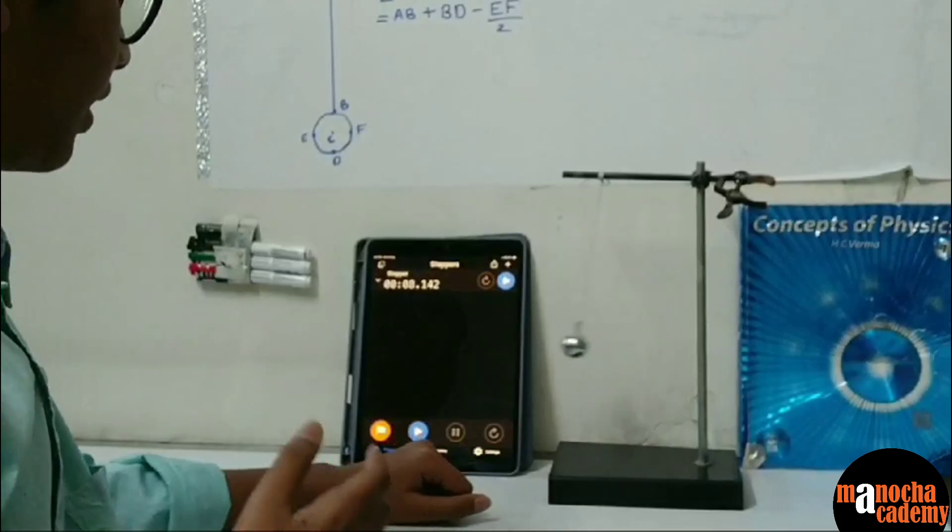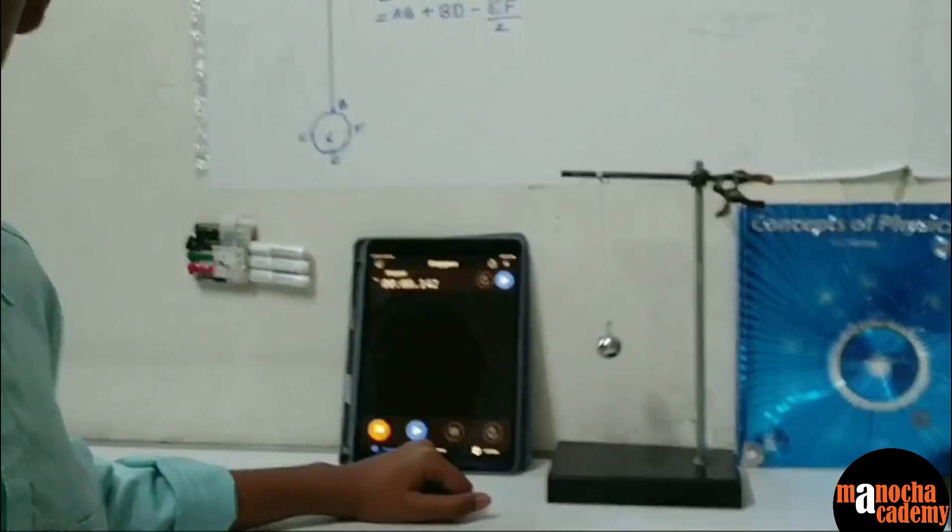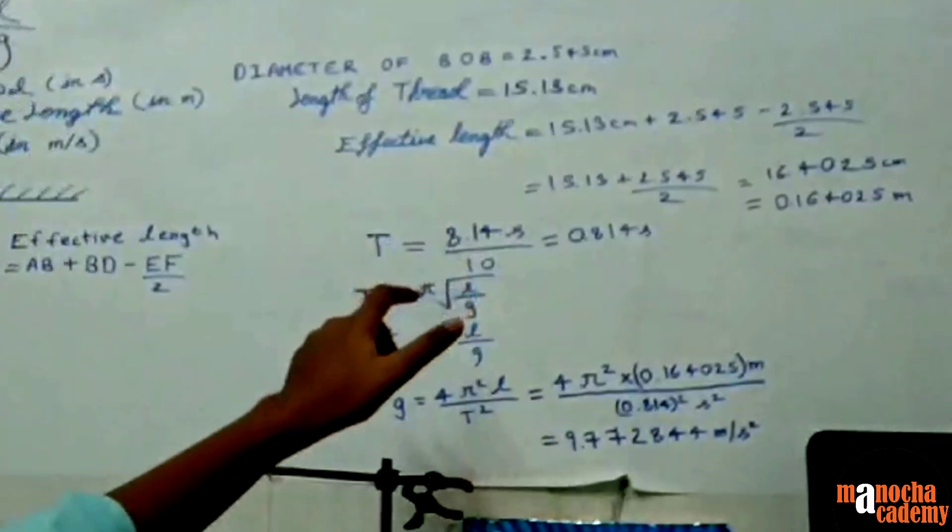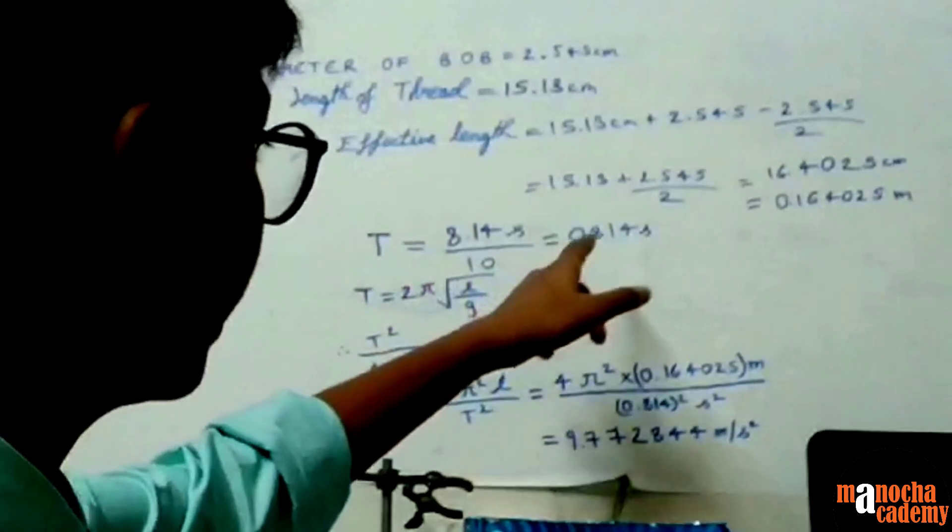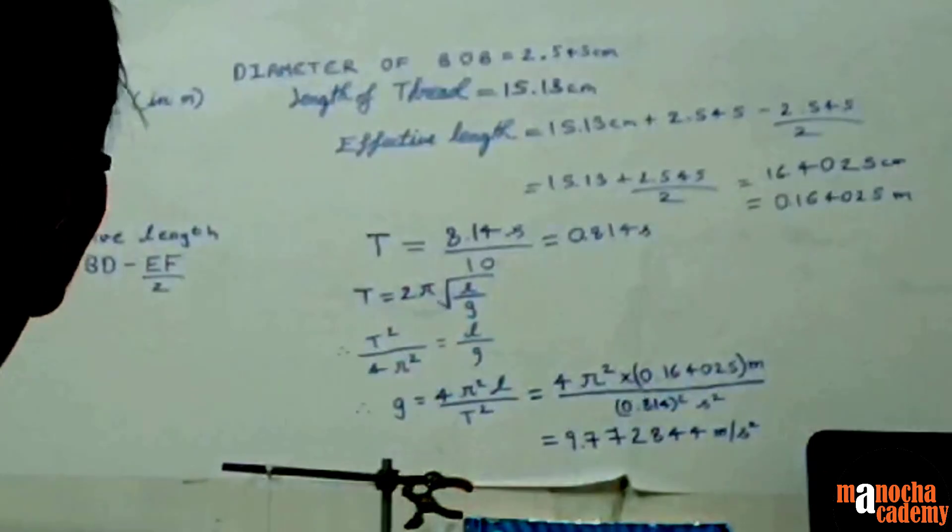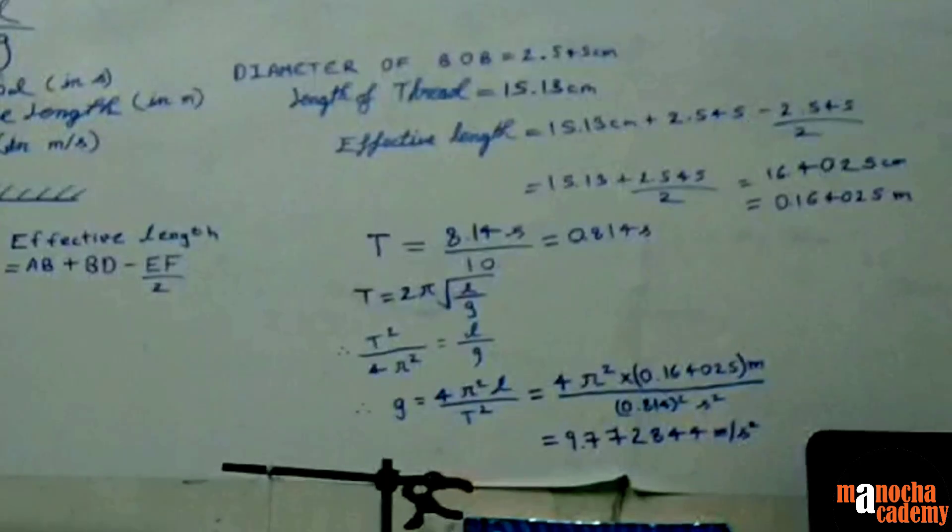So the time period is 8.14 seconds. Now we will divide 8.14 seconds by 10 to get 0.814 seconds. Now 0.814 seconds is the time period for one single oscillation.